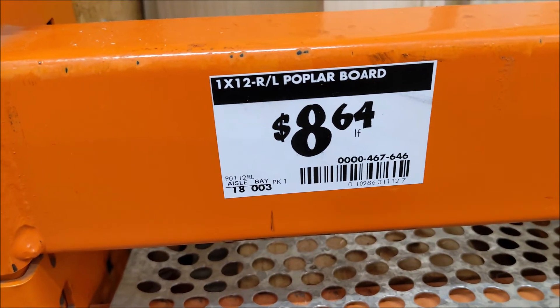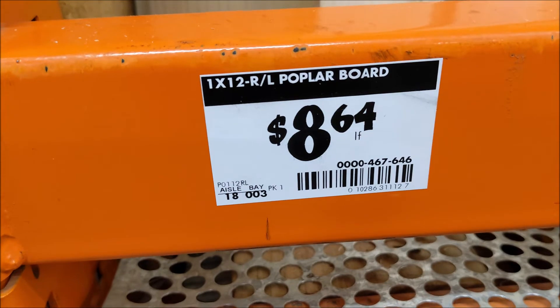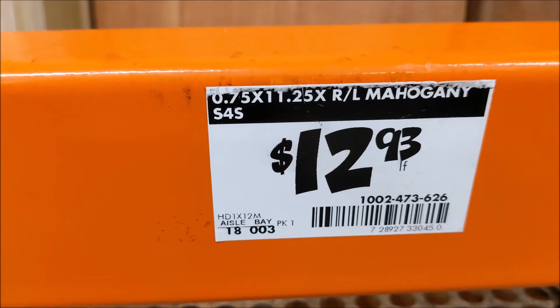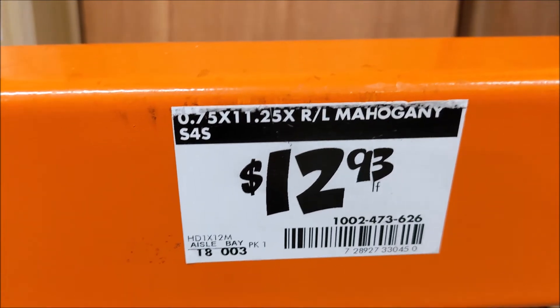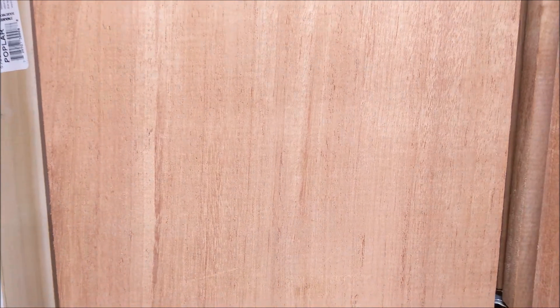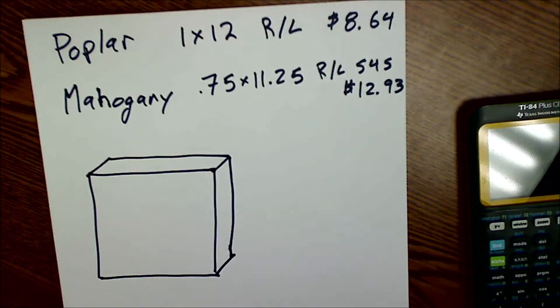This is poplar, 1x12, random lens, $8.64 linear foot. Over here to the mahogany, three quarters by 11 and a quarter, random lens, surface 4 sides, pretty grain. But what does all that mean?